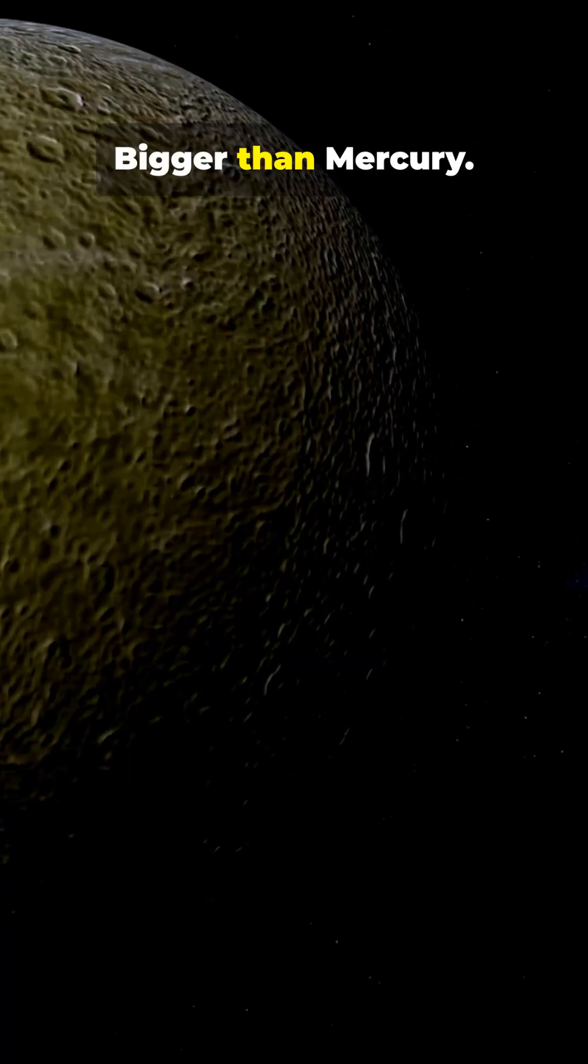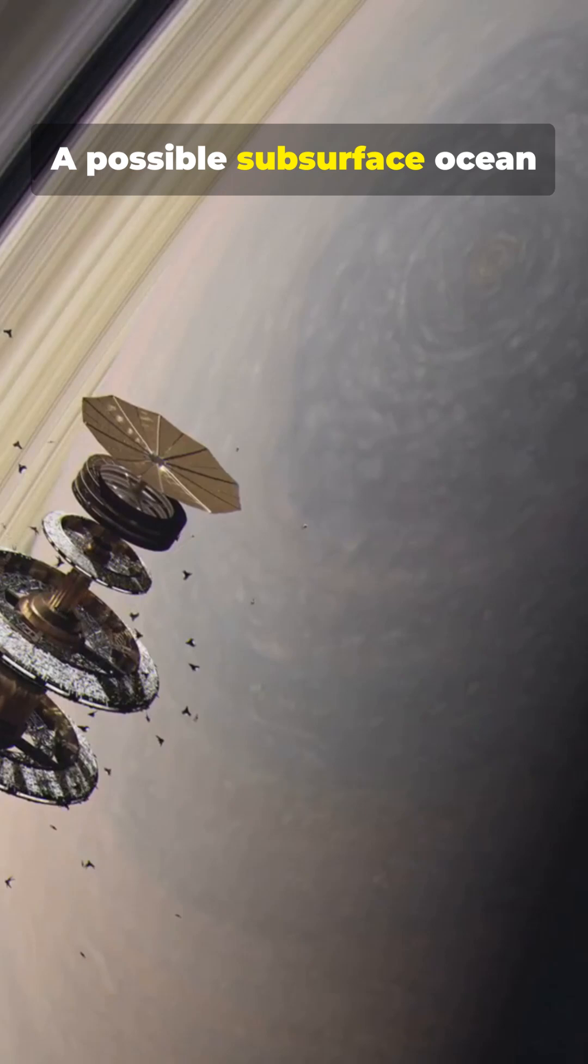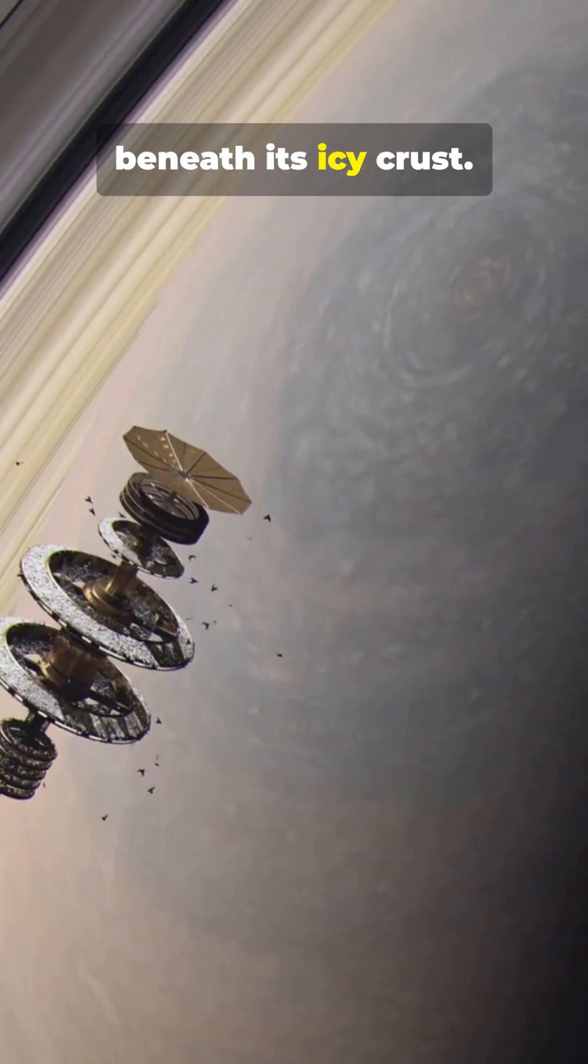Left side, Titan. Bigger than Mercury. Shrouded in orange haze. It rains methane. Has rivers and seas. A possible subsurface ocean beneath its icy crust.